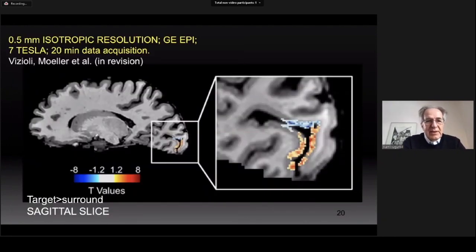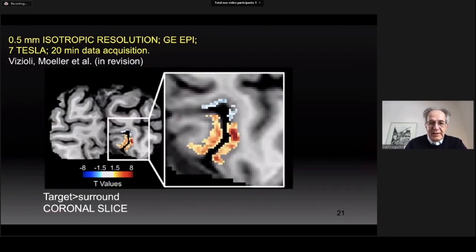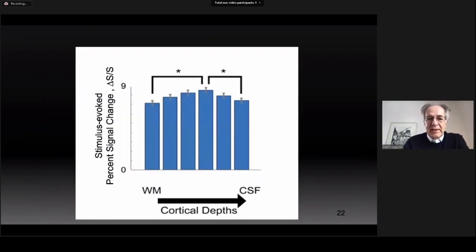The beauty of this data is really appreciated not on a flattened surface but on the real cortical surface. An axial sagittal slice shows the target and surround activation in the visual cortex — you can see that the activation follows the gray matter boundaries extremely beautifully. A coronal slice shows again that activation is restricted to the gray matter. In addition, we start observing differences across the cortical layers.